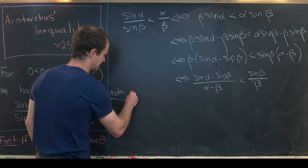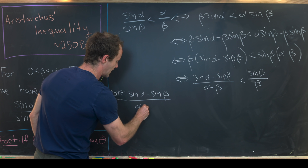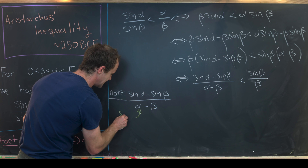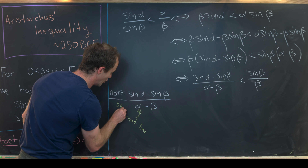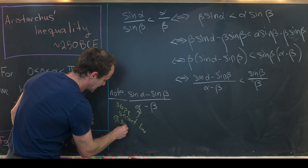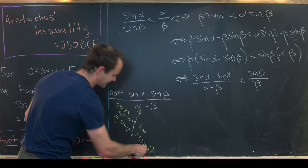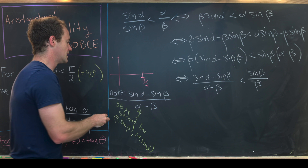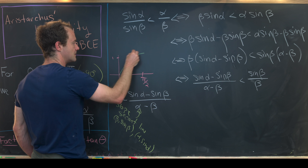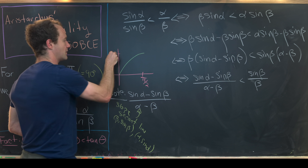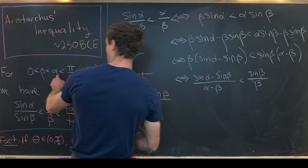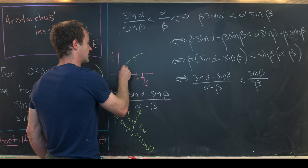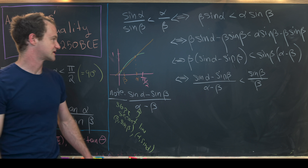Now let's prove this equivalent inequality. The expression sine(alpha) minus sine(beta) over alpha minus beta is geometrically the slope of the secant line between the points (beta, sine(beta)) and (alpha, sine(alpha)) on the sine curve. Sketching it out: the sine function starts at zero and ends at one at pi/2, with alpha and beta marked on the x-axis. The slope we're computing is the slope of the secant line between those two points.